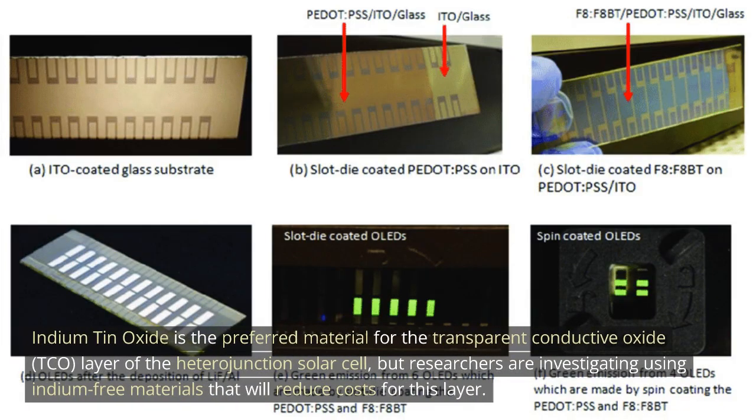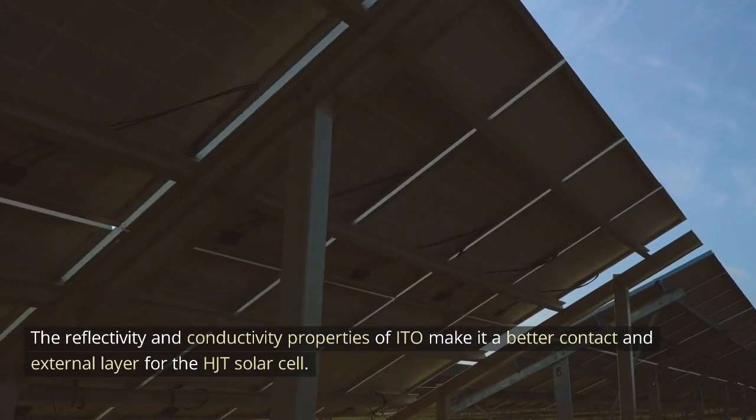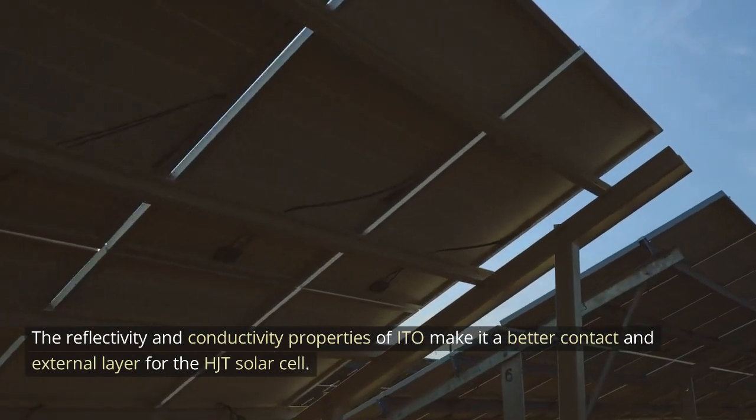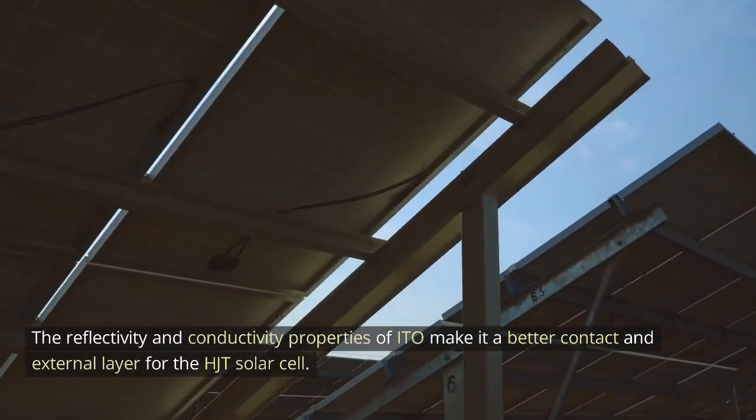Indium tin oxide is the preferred material for the transparent conductive oxide, TCO, layer of the heterojunction solar cell, but researchers are investigating using indium-free materials that will reduce costs for this layer. The reflectivity and conductivity properties of ITO make it a better contact and external layer for the HJT solar cell.